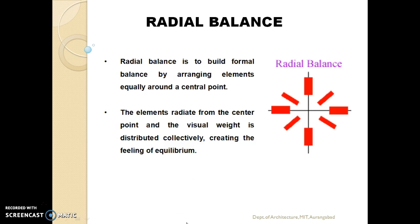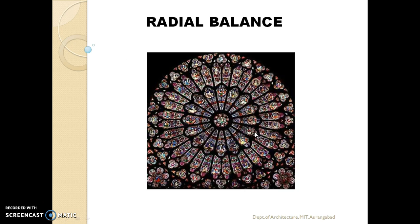Radial balance is to build formal balance by arranging elements equally around a central point. The elements radiate from the center point and the visual weight is distributed collectively, creating this feeling of equilibrium. A perfect example of radial balance would be the rose window in the churches of France, Italy, or England during the Gothic period.